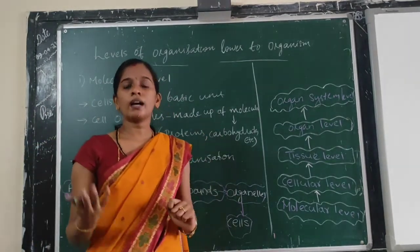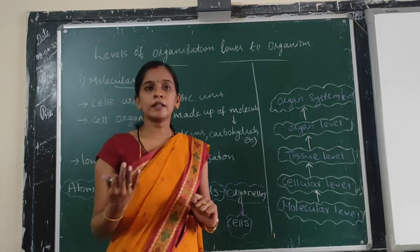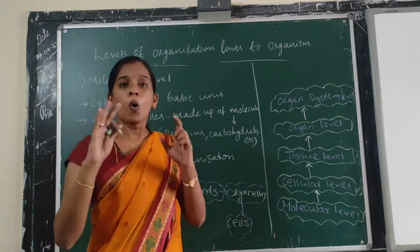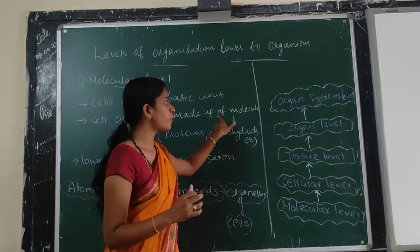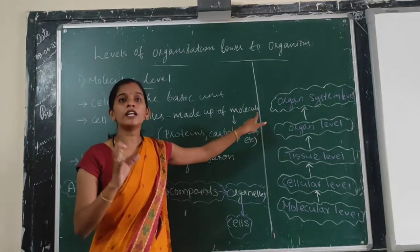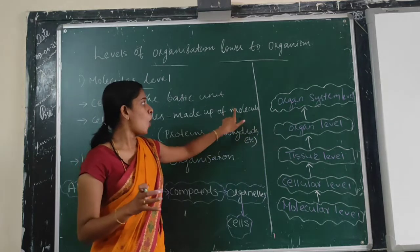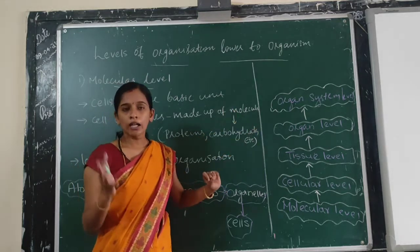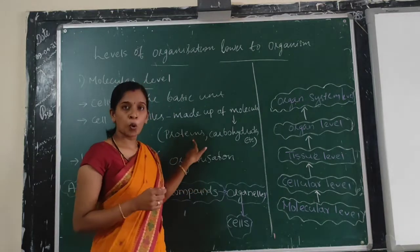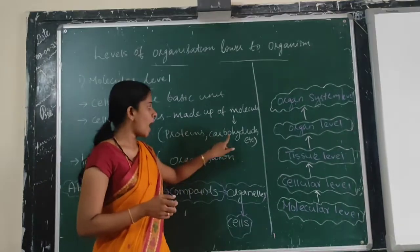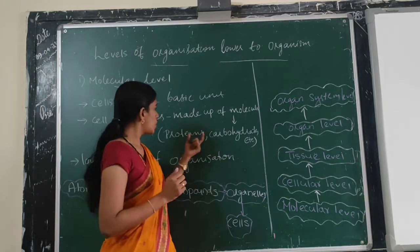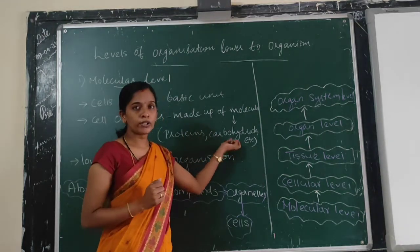These organelles — mitochondria, endoplasmic reticulum, ribosomes — are all made up of organic molecules such as carbohydrates, fats, and so on.